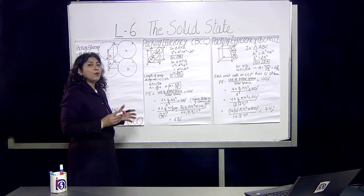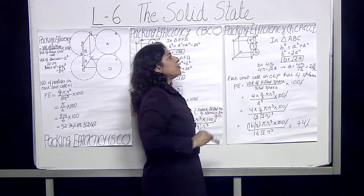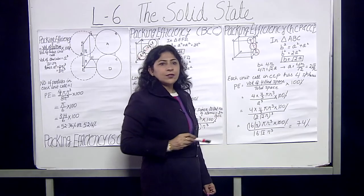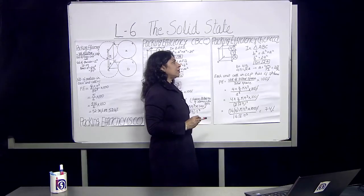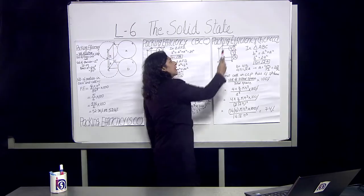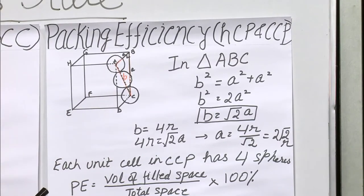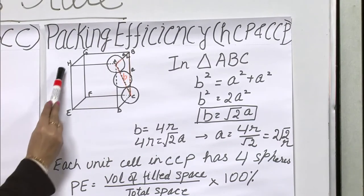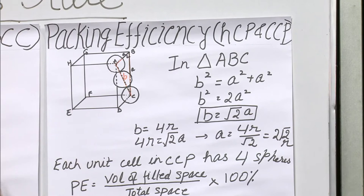This is the face-centered cubic cell. In face-centered cubic, there are 6 faces giving 3 atoms, plus 1 from the corners of the simple cubic cell, making a total of 4 atoms per unit cell.